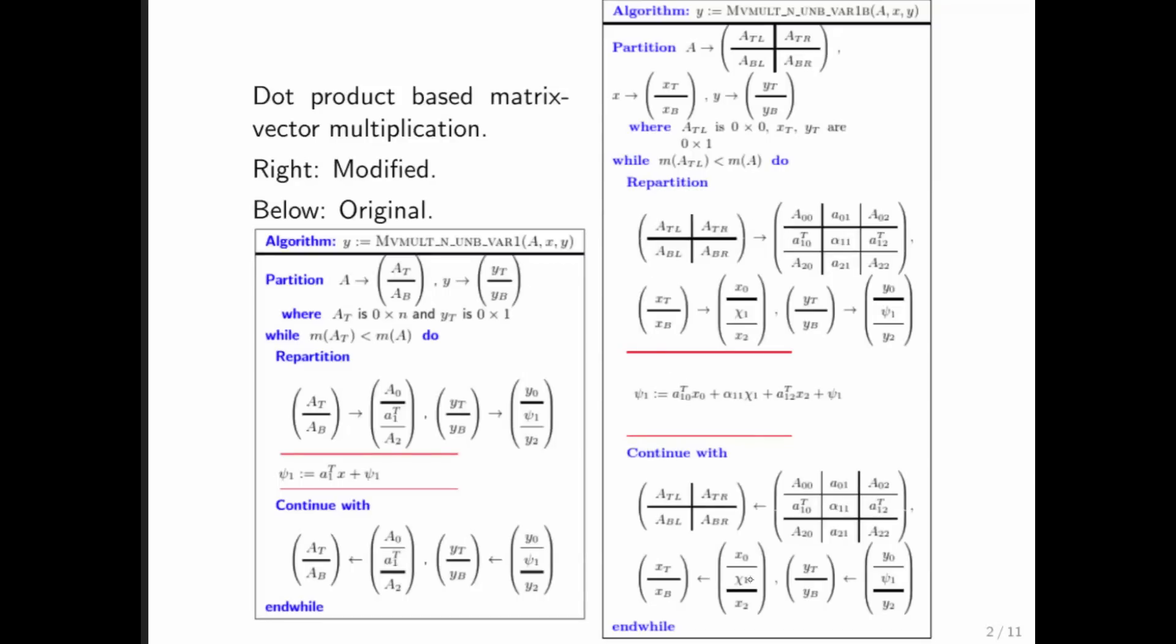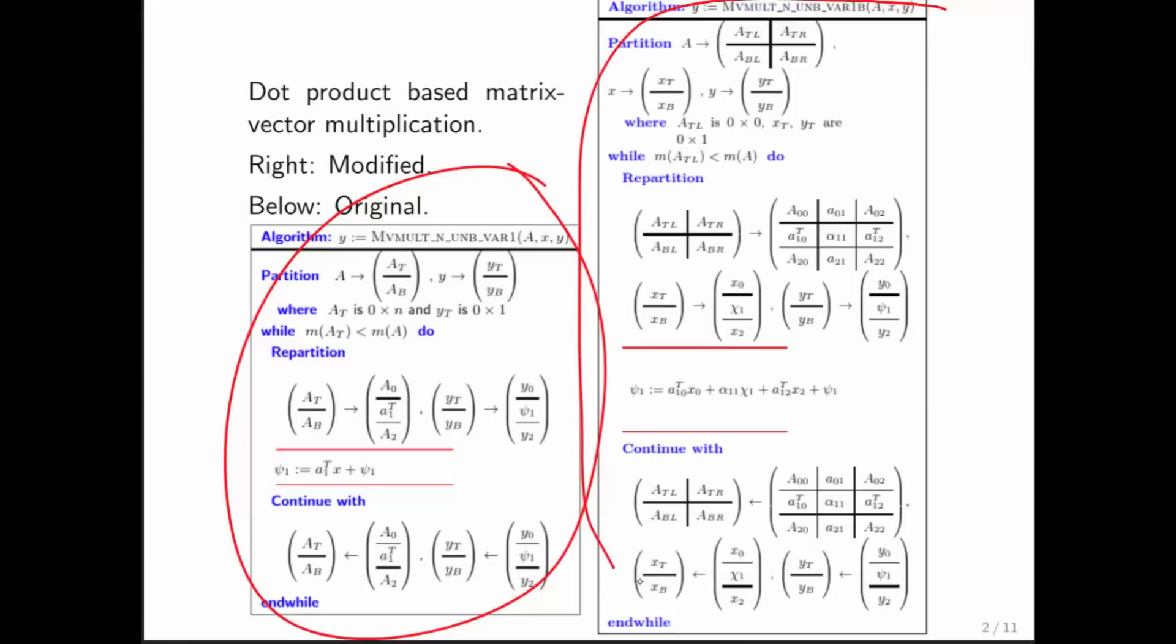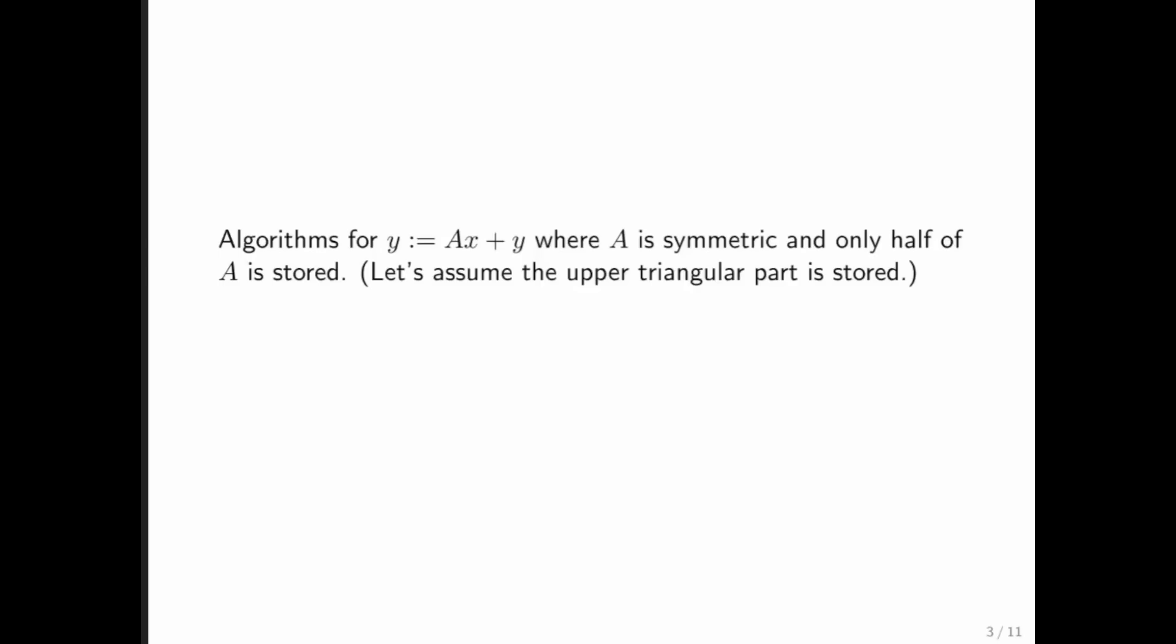So again, on the left, we have our original matrix vector multiplication algorithm. And on the right, we have this version where we march through the matrix exposing quadrants. What we're going to do is we're going to again look at y equals A times x plus y. But now A is symmetric, so we have a matrix. We know where its diagonal is.